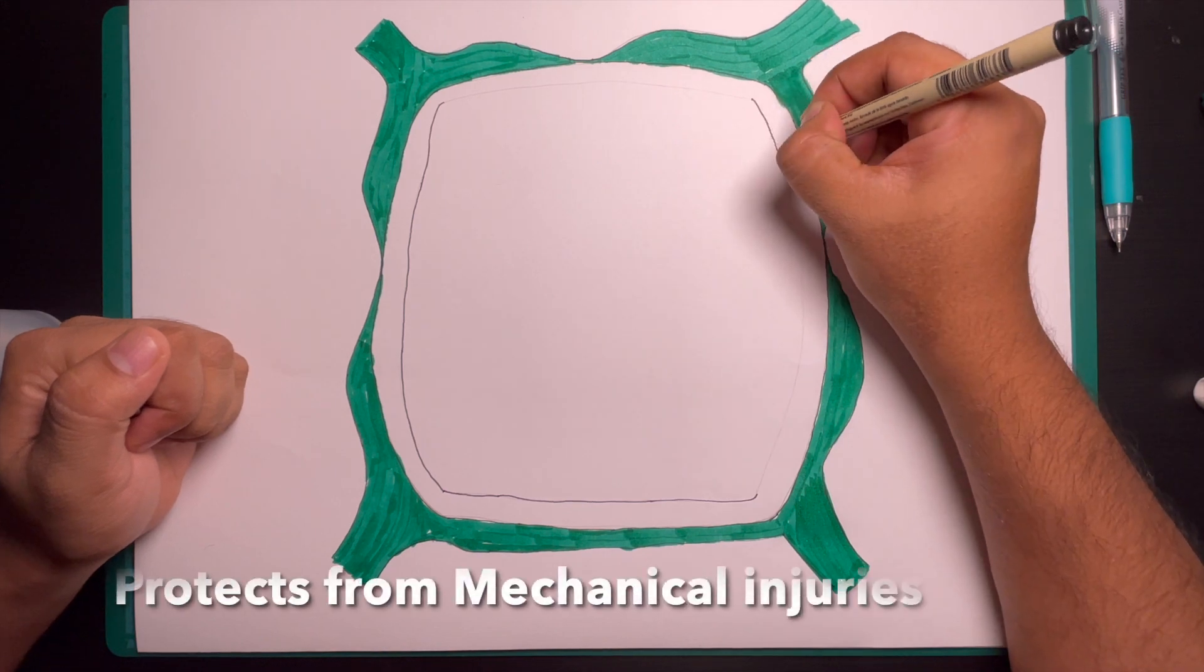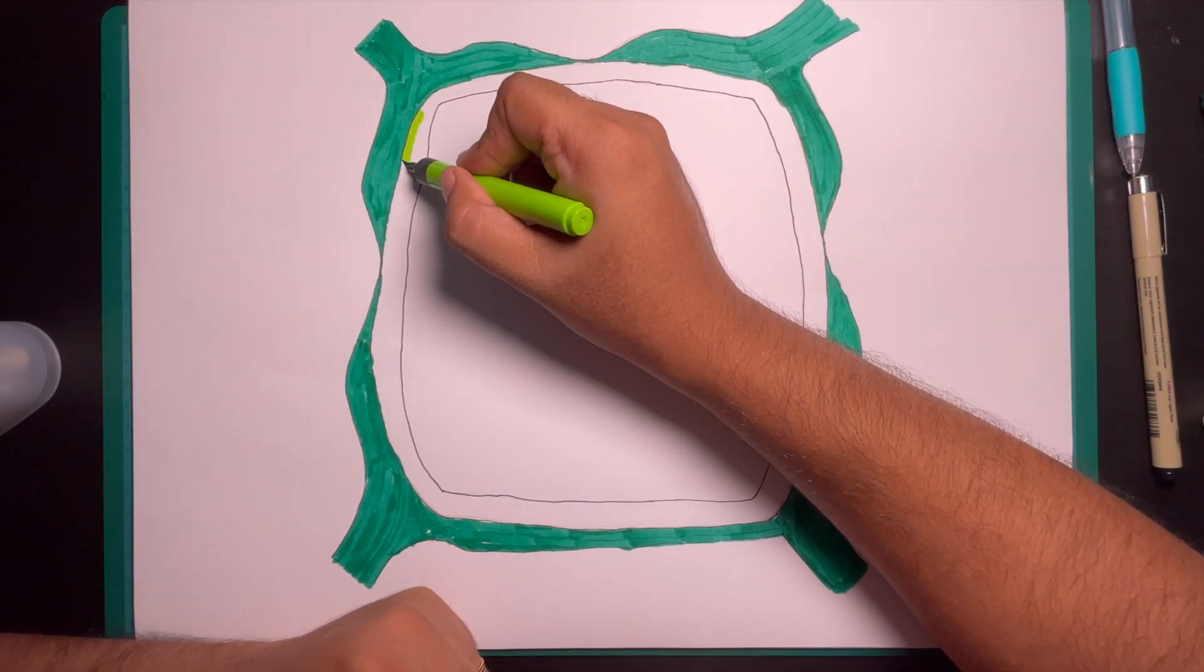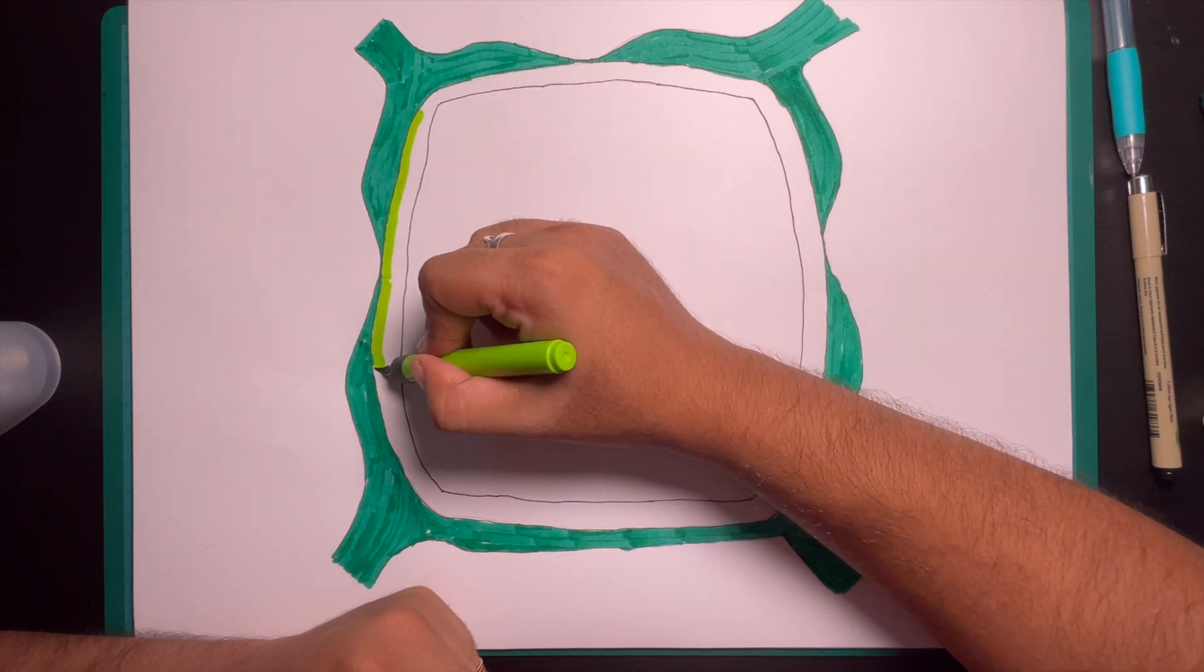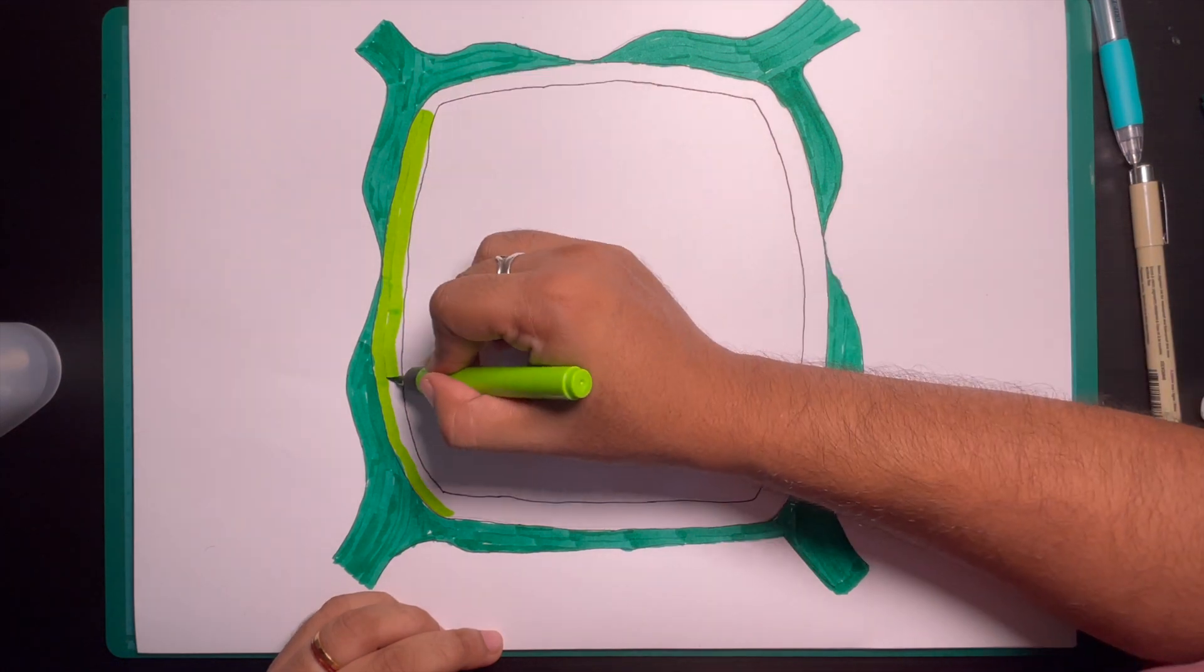The functions of the cell wall are: protects the cell from mechanical injuries, maintains the shape of cell and provides firmness, acts as a permeable veil and helps in movement of water and other substances.